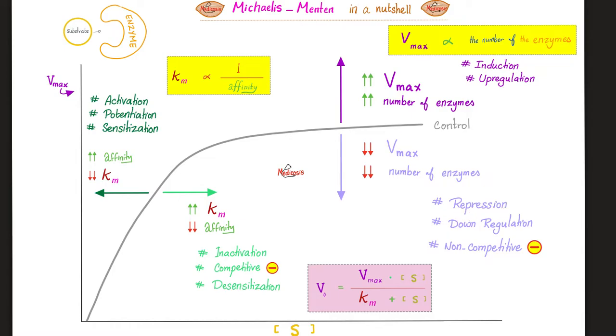Conversely, if I cause repression, or downregulation, or non-competitive inhibition, or I decrease the number of enzymes, the VMAX will decrease, shifting the curve downwards. Moreover, if I cause activation, or potentiation, or sensitization, I'll increase the affinity between the substrate and the enzyme. When the affinity goes up, KM goes down. Conversely, if I cause inactivation, competitive inhibition, or desensitization, all of this will lower the affinity, raise the KM, and will shift the curve to the right. All of this was Michaelis-Menten.